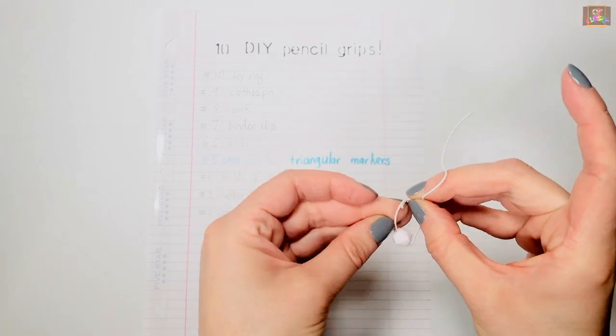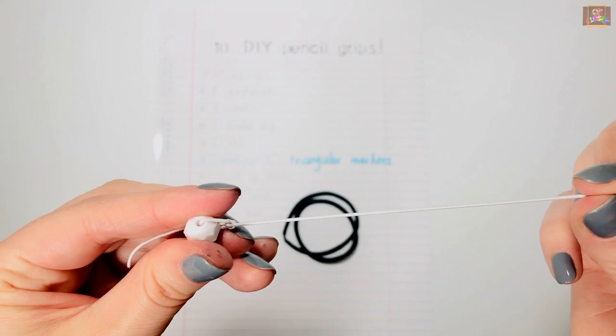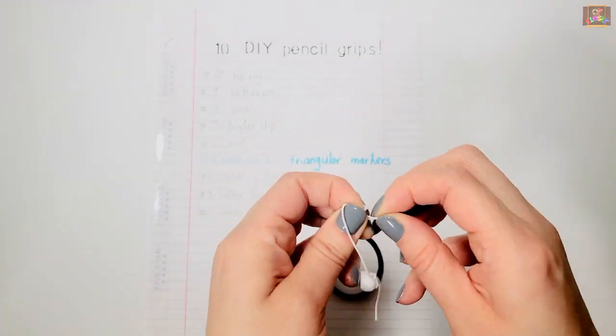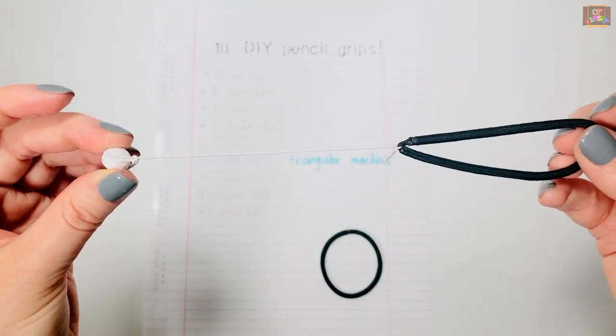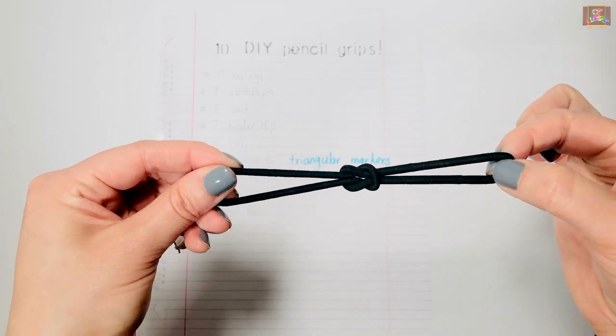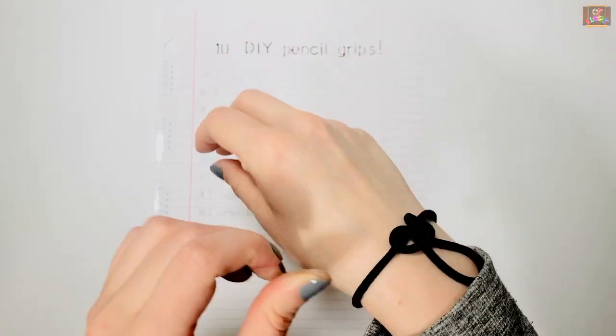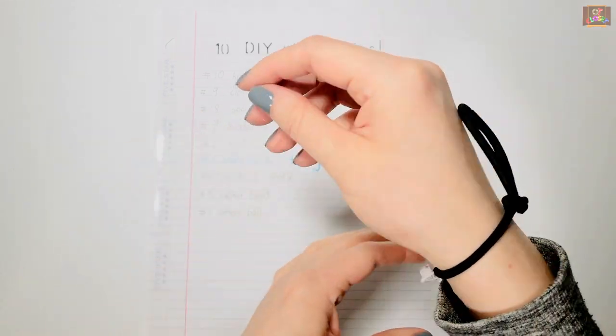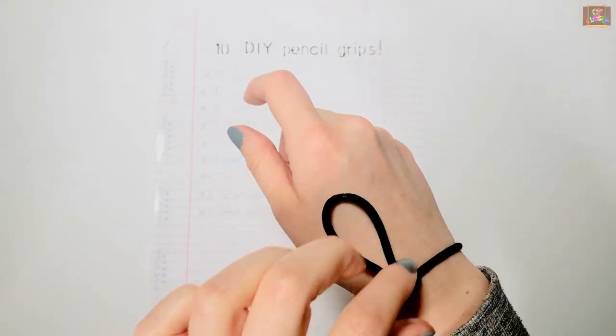Next, make two knots connecting the elastic to one of the hair ties. Finally, connect two hair ties together and place one of them on your wrist. Close the ring and pinky fingers against the bead and place the pencil inside the loop of the hair tie.